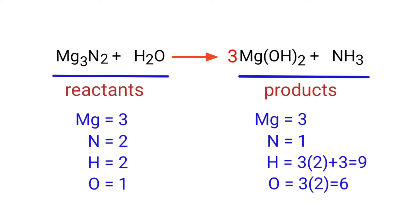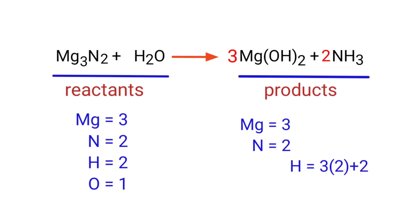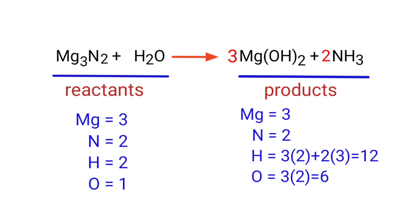Now we need to balance the nitrogen atoms. To do this we need to put a coefficient of 2 in front of NH₃. The nitrogen atoms are now balanced.